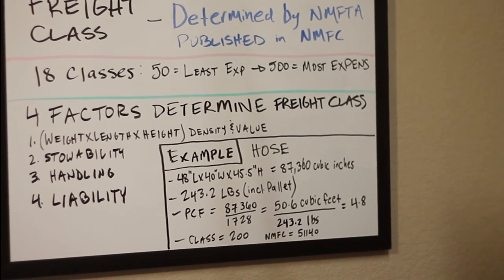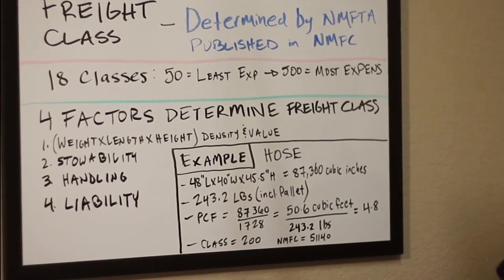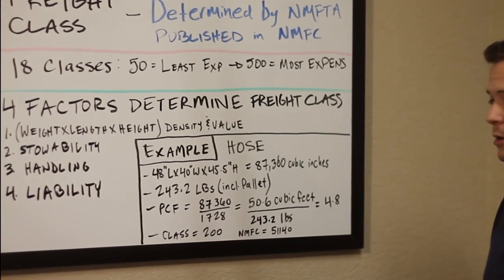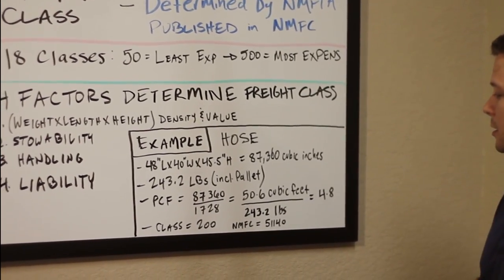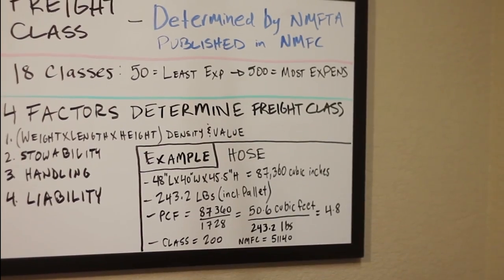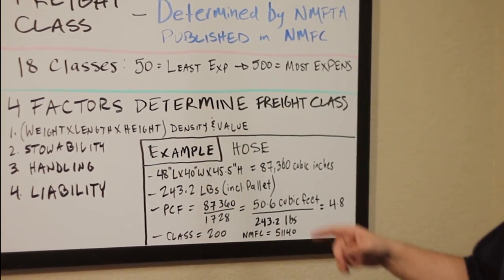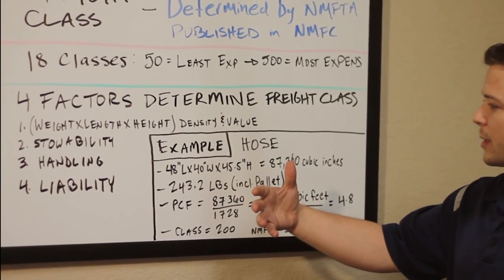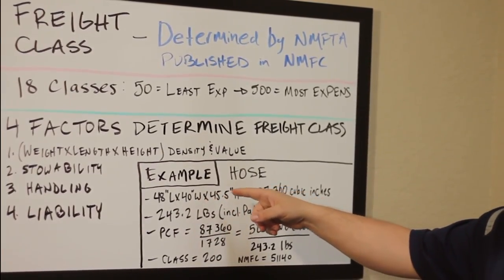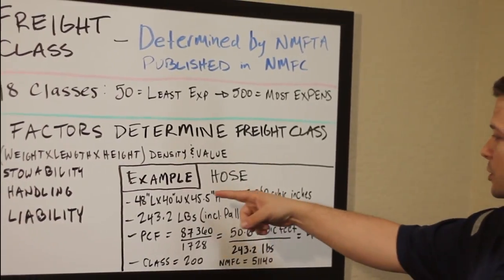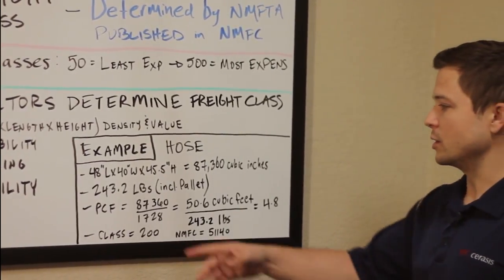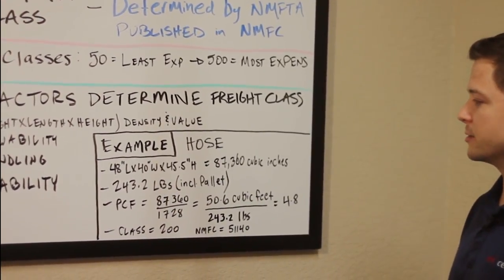When it comes to these four factors, let's take a look at an example involving hosing. If you look in the NMFC book or online at nmfta.org, the NMFC number for hosing is 51140. This freight — a package of hosing — is 48 inches in length, 40 inches wide, and 45.5 inches high. That gives us 87,360 cubic inches. We also know it's 243.2 pounds, including the pallet. You have to make sure you include the pallet in your overall weight.